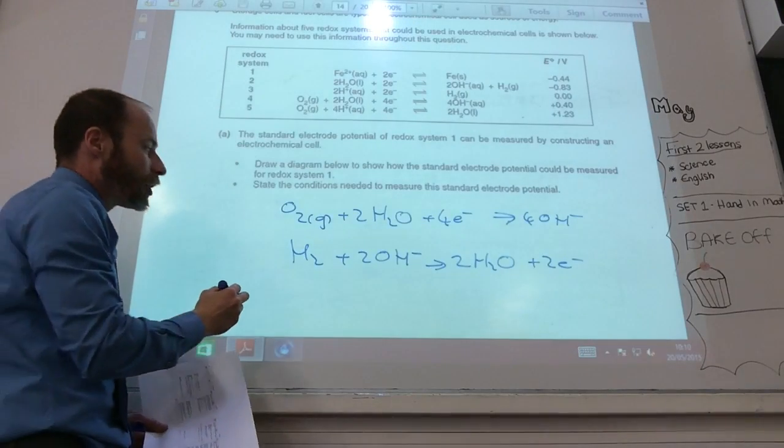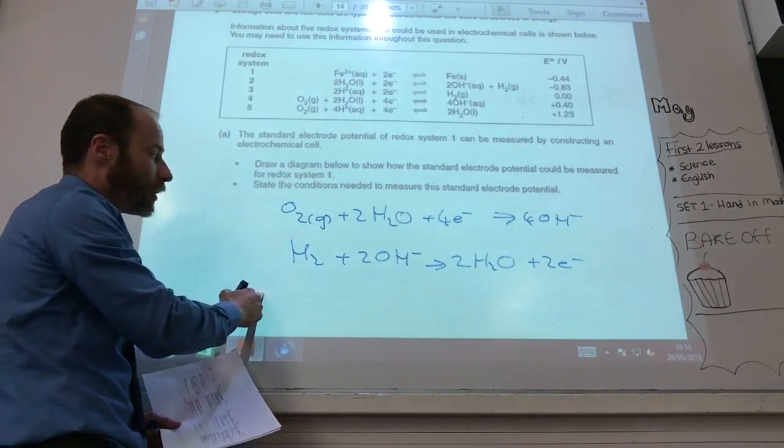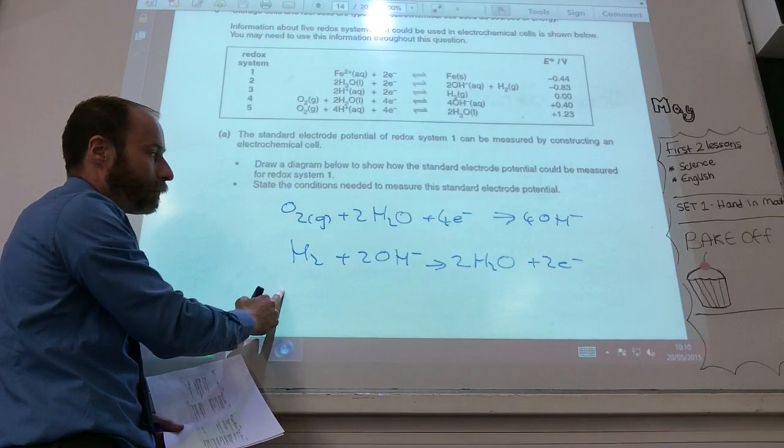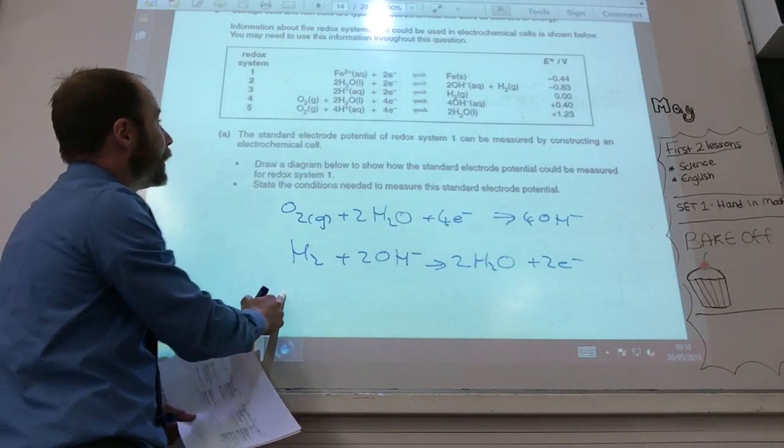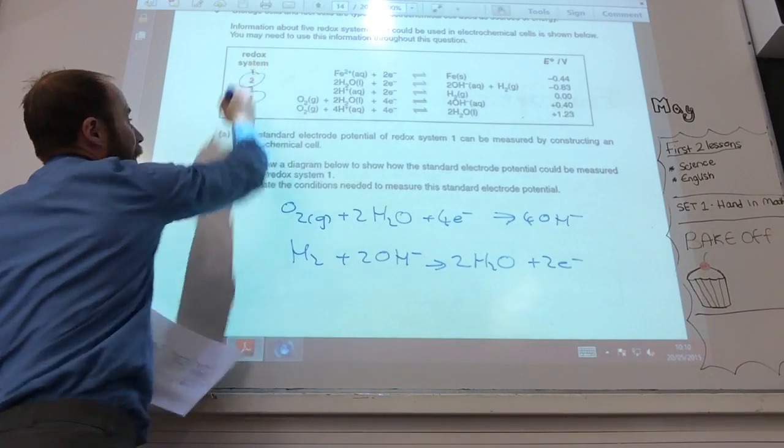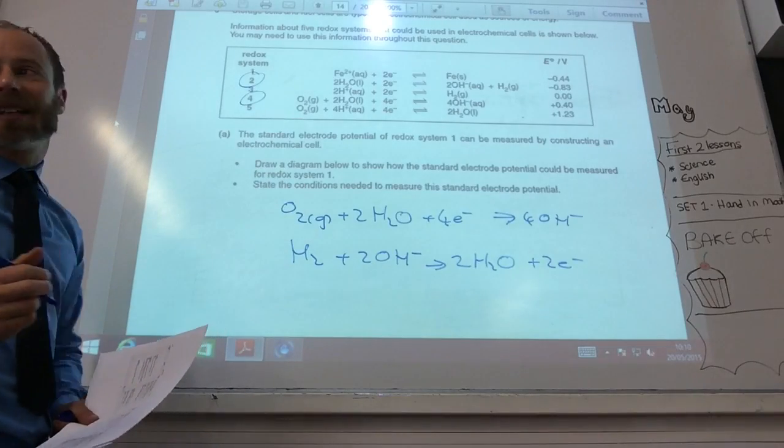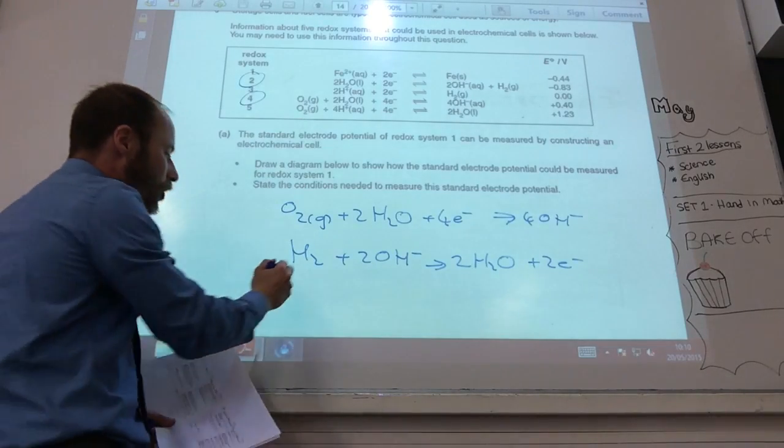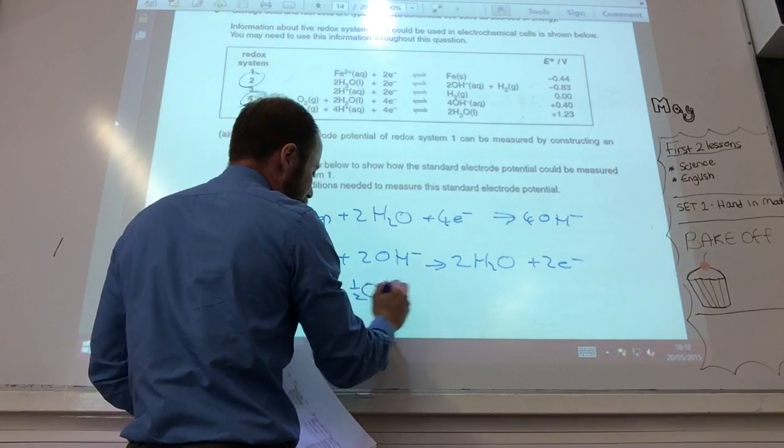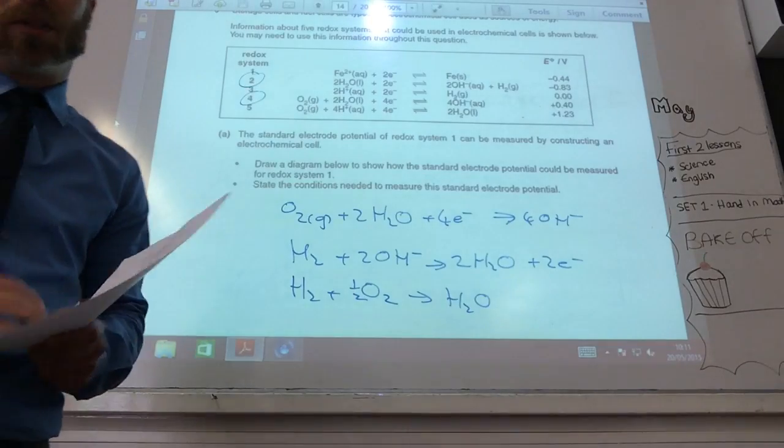Okay, you've then got to times this one. When you combine them together, you've got to times this one by 2. So you're using equations four and two. Because five involves oxygen under acidic conditions. And you should end up with 2 H2 plus O2 goes to 2 H2O as your overall equation.